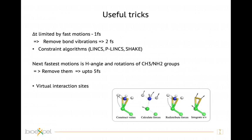The time step is limited by fast motions, particularly bond vibrations, and light atoms vibrate faster than heavy atoms. One useful trick to overcome this limitation is to use a constraint algorithm that constrains your bonds. In GROMACS we have LINCS, P-LINCS, and SHAKE that can be used. The constraint settings should also be consistent with how your force field was parametrized.